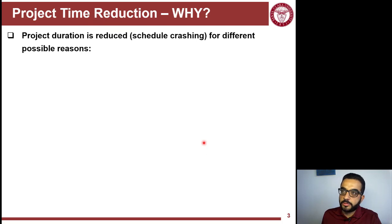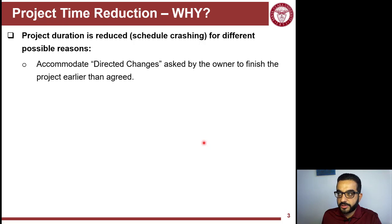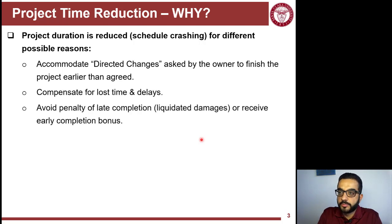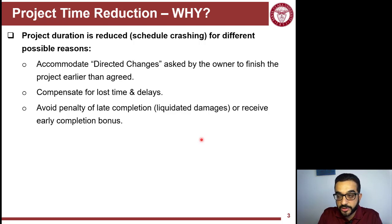There are different needs for reducing project duration. One is directed changes — contractual language in typical construction project contracts where the owner would like to change the agreed-upon schedule duration and directs the contractor to finish the project faster. Another reason is from the contractor's side: they did something wrong or did not expect certain site conditions that reduced productivity, so they want to crash the schedule to compensate for lost time and avoid penalties or liquidated damages.